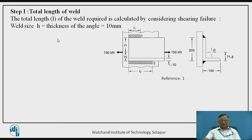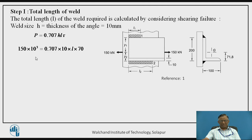The total length L = L1 + L2. The load applied causes shearing failure, so parallel welds are subjected to shearing failure. The total shearing strength of the weld equals the throat area multiplied by τ, the allowable shear stress. The total load applied is 150 kN, and from this the total length L comprising L1 + L2 is calculated first as L = 303.09 mm.